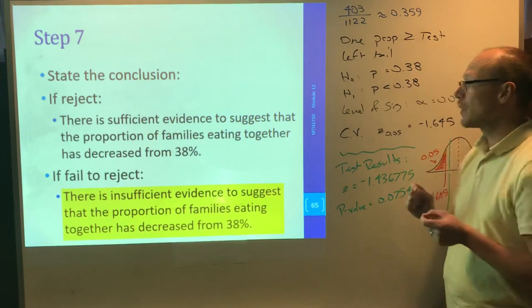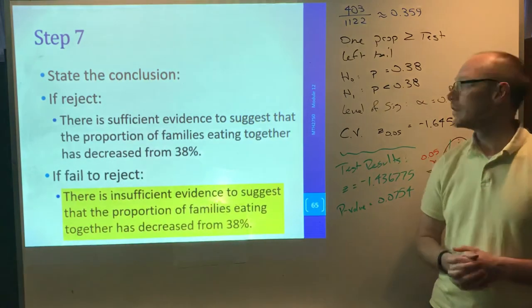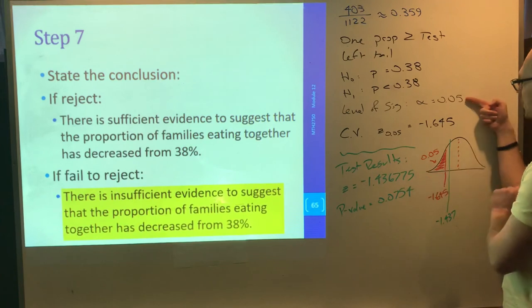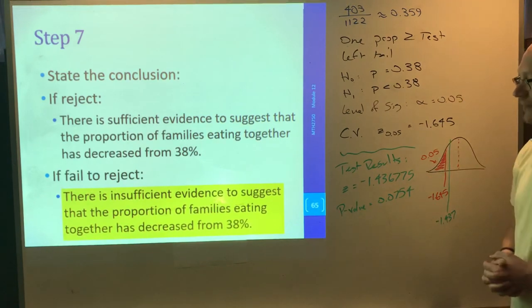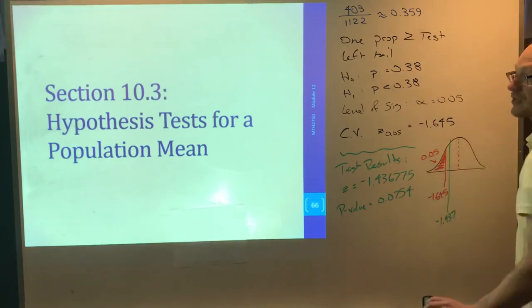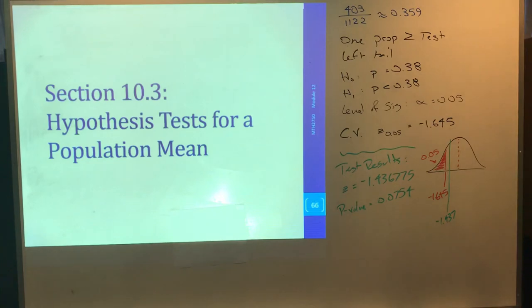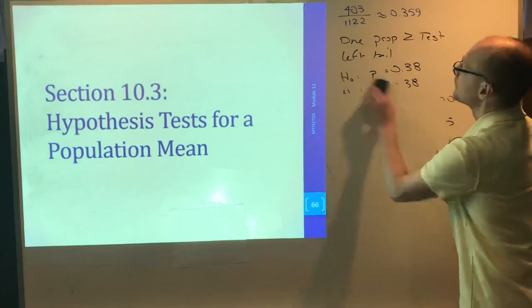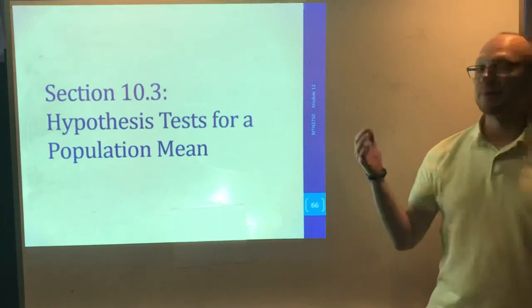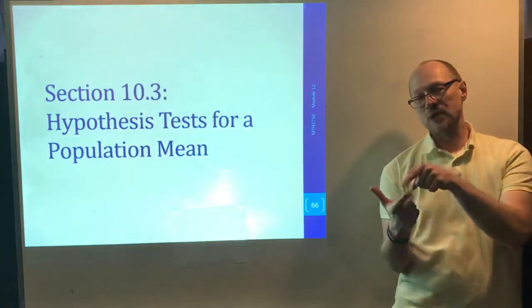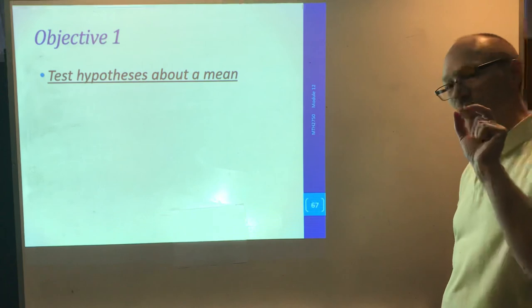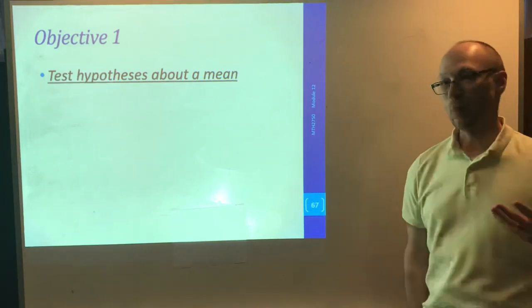You can see, once you get your head wrapped around it, it's a quick matter of typing in the correct things in StatCrunch and coming up with your results and comparing your critical value to your test statistic, your level of significance to your p-value, and letting everything else go from there. So, let's jump right in, then, to Section 10.3, which is hypothesis tests for a population mean. I'll continue on. So, how does this process work differently? Well, it's dealing with population mean, the average. Not Star Trek versus Star Wars, but what is the weight of a penny? And it's only minorly different.